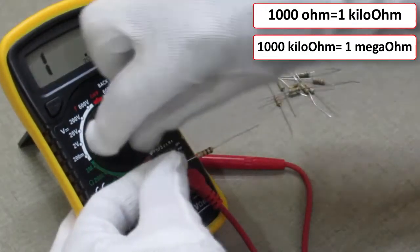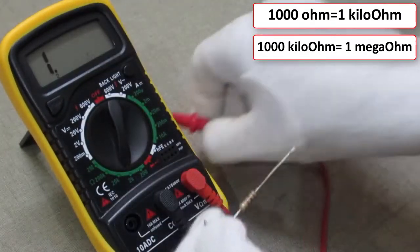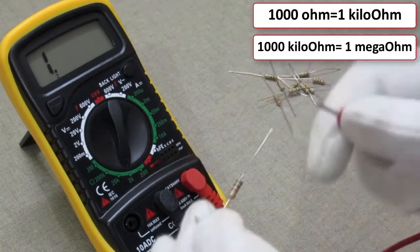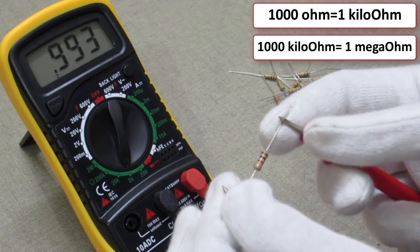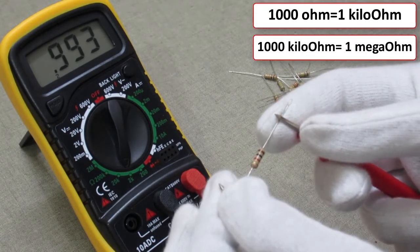Rotate the switch to 2 kilo ohms, then check once again. As you can see, the multimeter is showing 0.993 kilo ohms. That means this resistor has approximately 1 kilo ohm resistance.